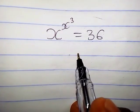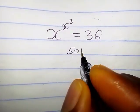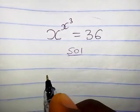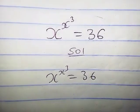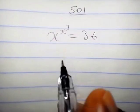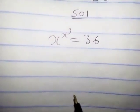How do we solve this kind of equation? It's actually pretty simple. We have x raised to the power s cube equals 36, so we are going to cube both sides of this equation.